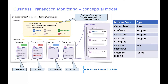A business transaction definition must have a start and end business event as a minimum. In this example, we have a business transaction definition created with six business events. The overall state of a business transaction is correlated using the customer order number that is contained in the message. The order placed business event is defined as a start event. The confirmed, dispatched, and delivery attempted business events are progress types. Delivery successful is an end event, and shipment missing is a failure event.